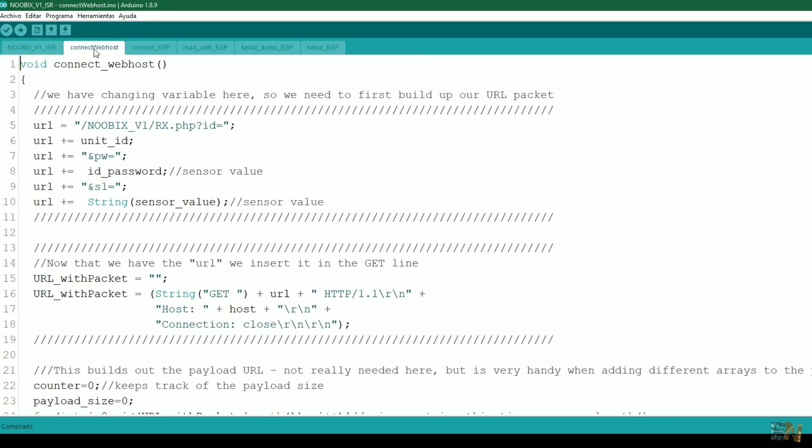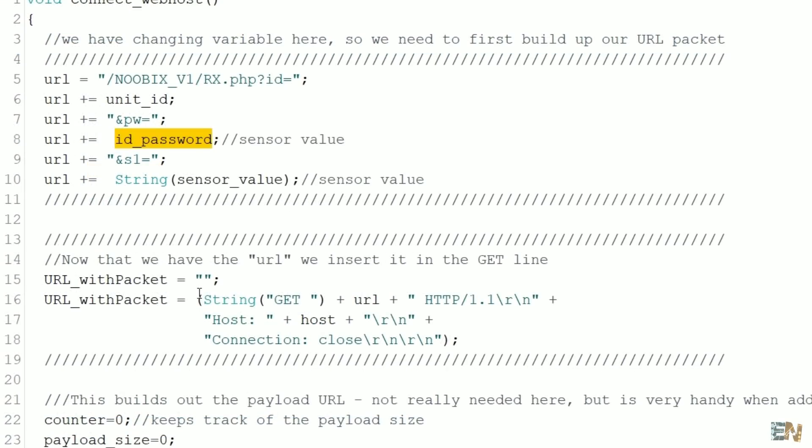We create the URL that we will send to the rx.php file and it will contain the user ID and password and also the sensor value. Then using the GET function, we send that to the website. The rest is done in the PHP file.